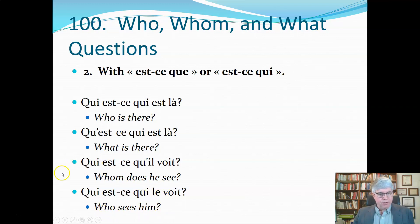These last two sentences are really similar. Qui est-ce qu'il voit—whom does he see? And qui est-ce qui le voit—who sees him? But they mean very different things. Here the qui is the subject; here the il is the subject.